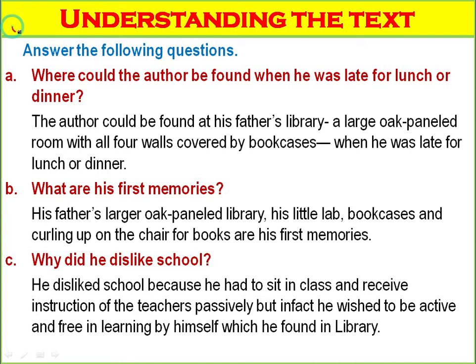Understanding the text — Question A: Where could the author be found when he was late for lunch or dinner? The author could be found at his father's library — a large oak-paneled room with all four walls covered by bookcases — when he was late for lunch or dinner. Question B: What are his first memories? His father's large oak-paneled library, his little lab, bookcases, and climbing upon a chair for books are his first memories.